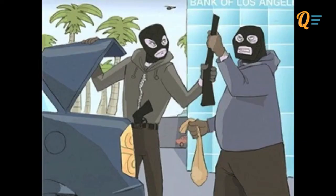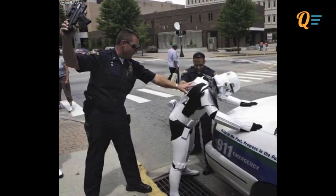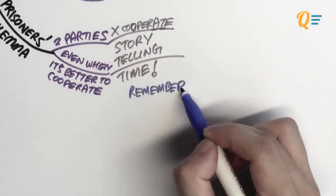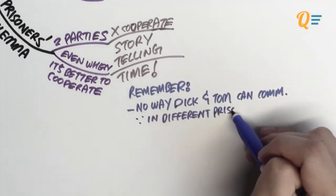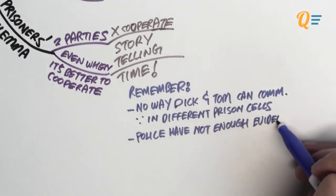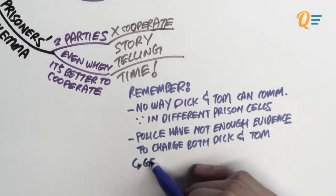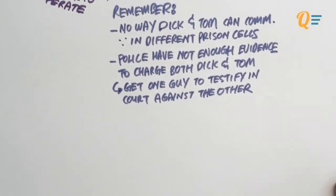This is Dick and Tom. They are part of a criminal gang which robbed one of the biggest banks in the country. They managed to get away on the day of the robbery, but about a month later, both were arrested by the Special Police Force and thrown into prison. While awaiting their criminal charges, Dick and Tom were placed in separate prison cells. There is no way they can communicate with each other. Coincidentally, the police do not have enough evidence to charge both of them for the robbery.